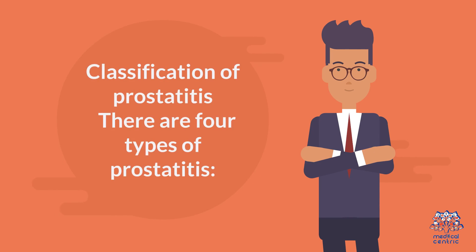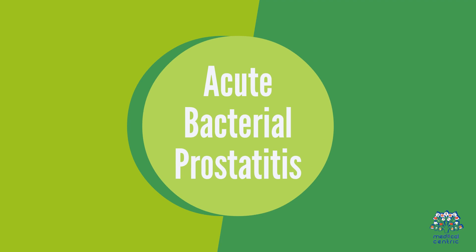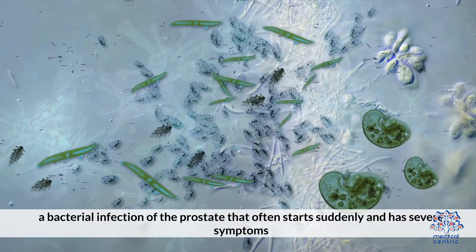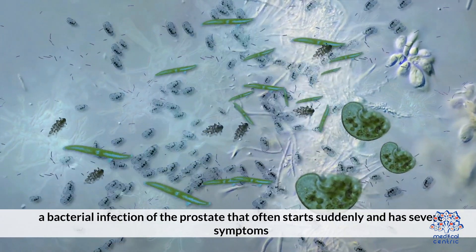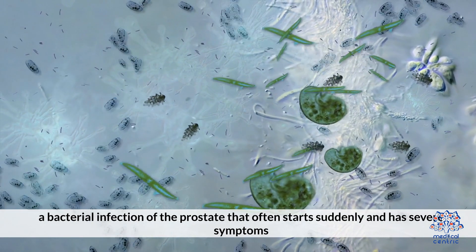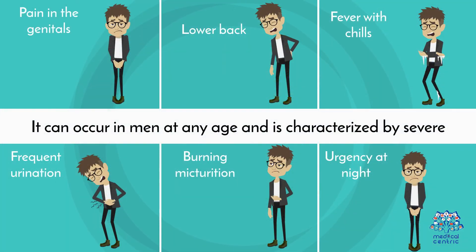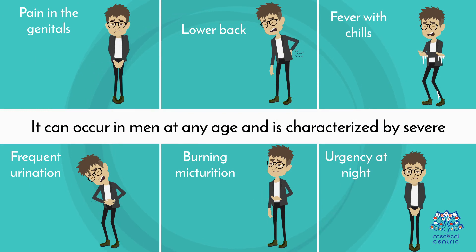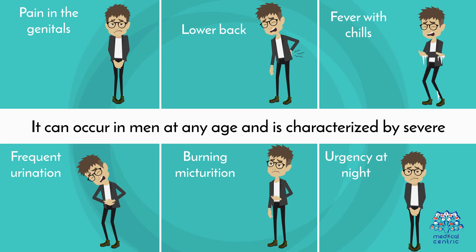There are four types of prostatitis. Acute bacterial prostatitis is a bacterial infection of the prostate that often starts suddenly and has severe symptoms. It can occur in men at any age and is characterized by severe pain in the genitals, the lower back, fever with chills, frequent urination, burning micturation, and urgency at night.